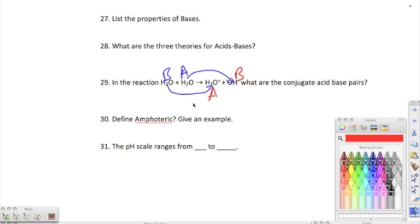Moving on to 30, it says define amphoteric and give an example. Amphoteric means that it can either be an acid or a base. We see that right here in the self-ionization of water. They were both water, but one of them was an acid, and the other was a base. The pH scale ranges from 0 to 14.